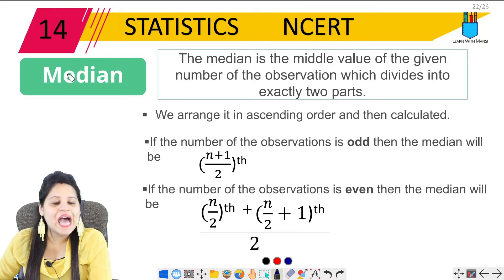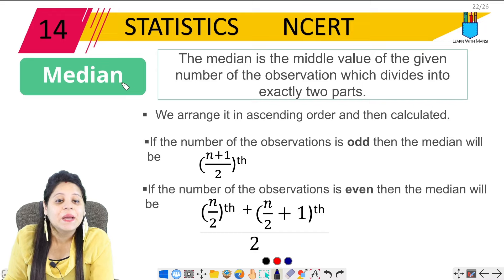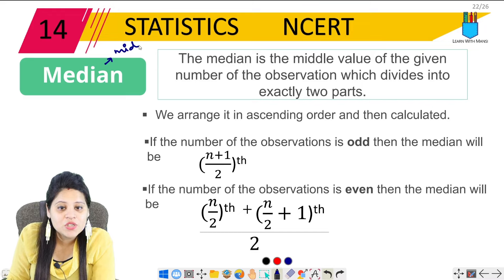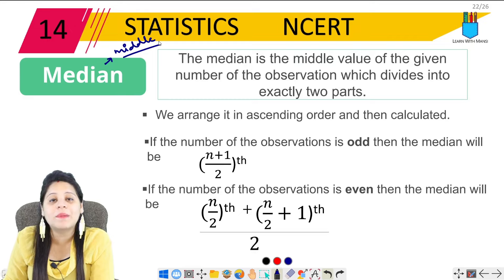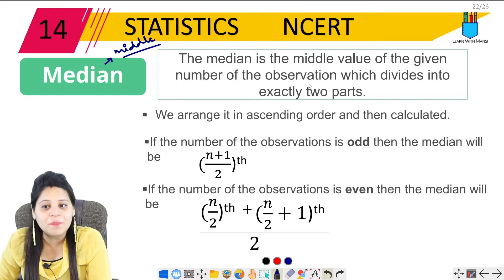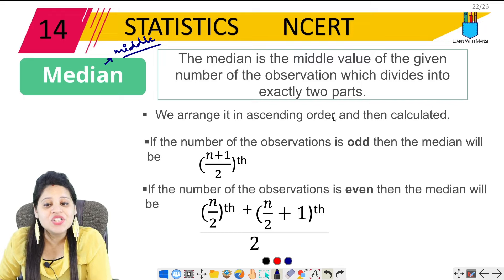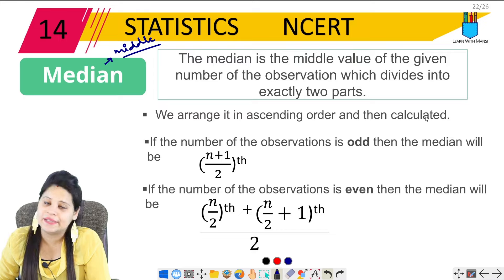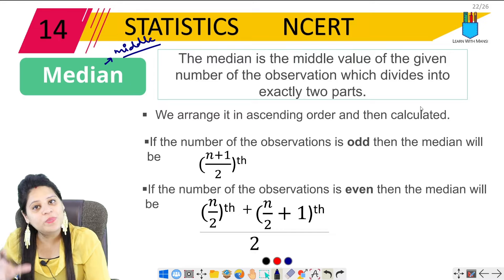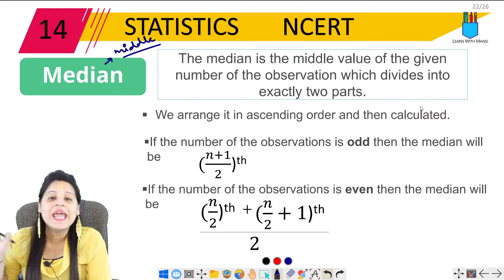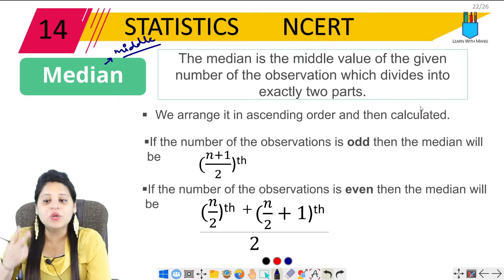Next we have median. The median is the middle value of the given number of observations which divides into exactly two parts. Median basically means middle. So when we talk about median, we are basically talking about the middle value.